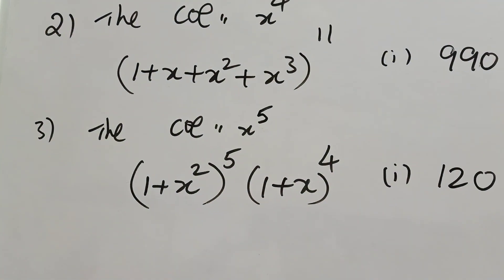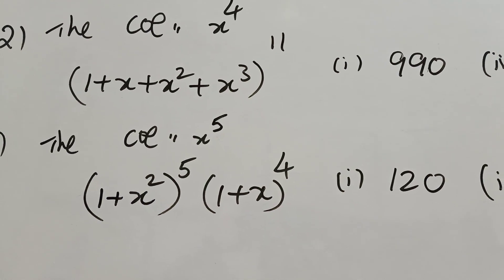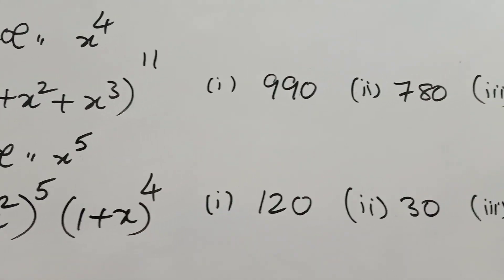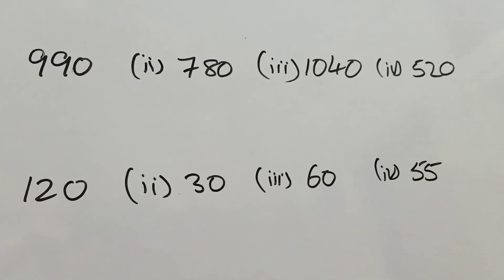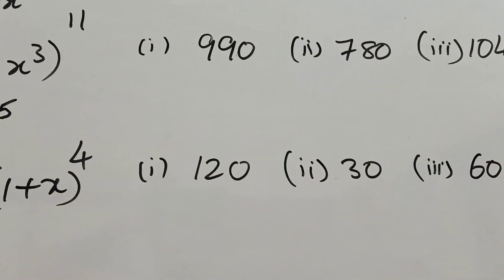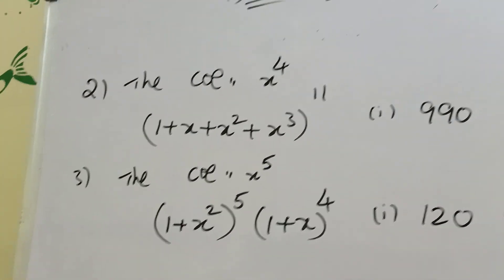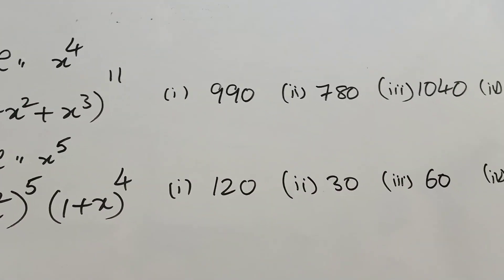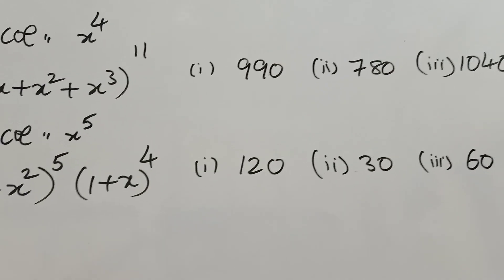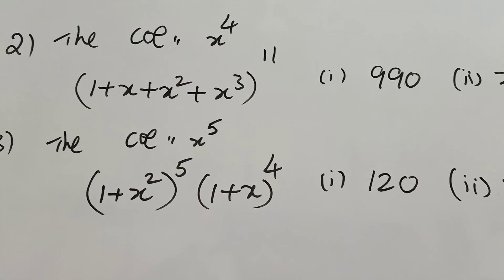The third problem: find the coefficient of x power 5 in (1 plus x square) whole power 5 into (1 plus x) whole power 4. Options are 120, 30, 60, 55. This is the same important model. Thank you very much.